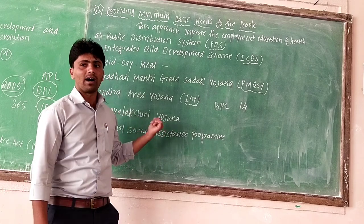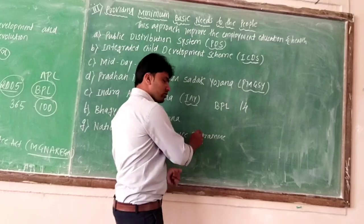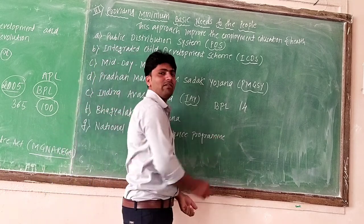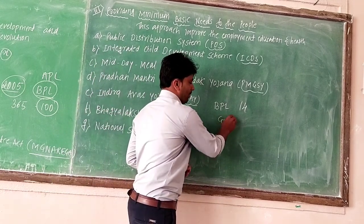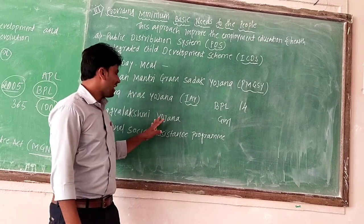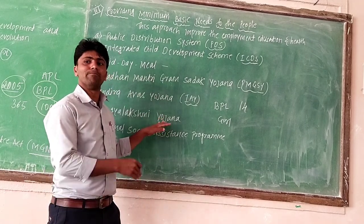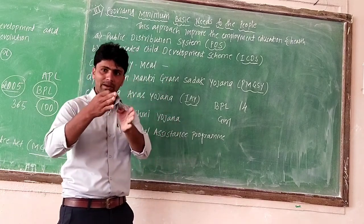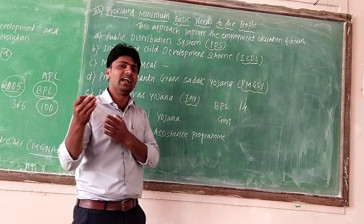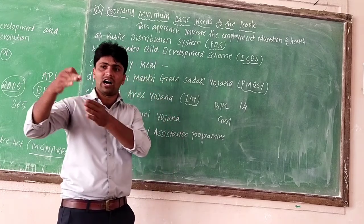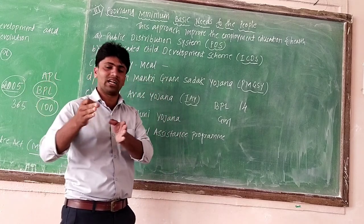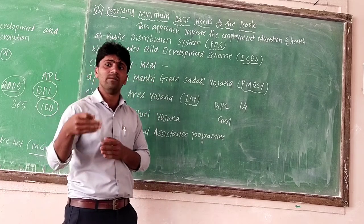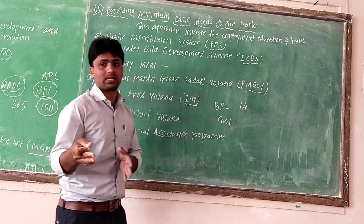Next is the Bhagyalakshmi Yojana. Under this scheme, if a couple's first baby is a girl, this policy applies to that family. They receive scholarships at the primary school, high school, and college levels. After the girl turns 18 years old, a lump sum amount is given to that family.